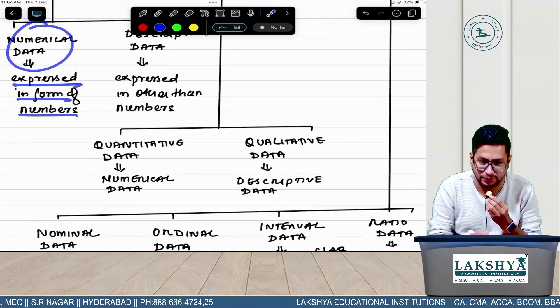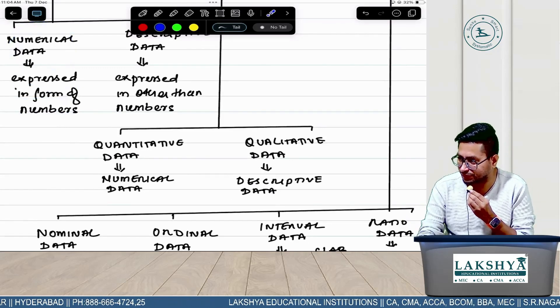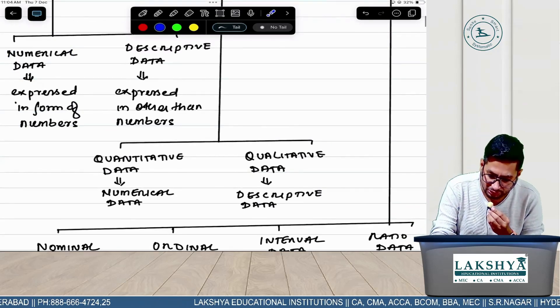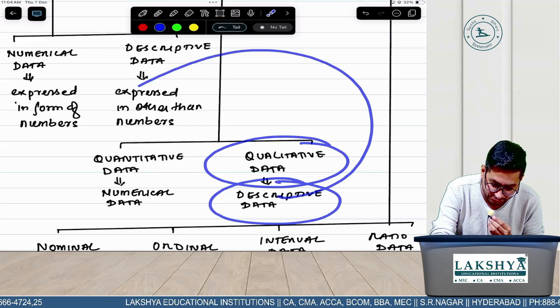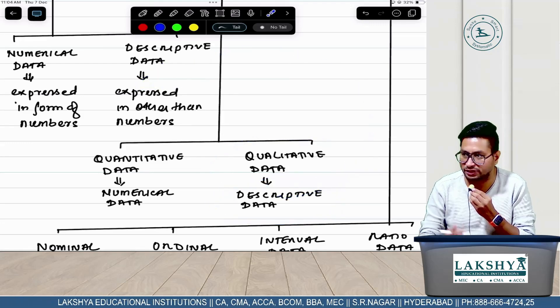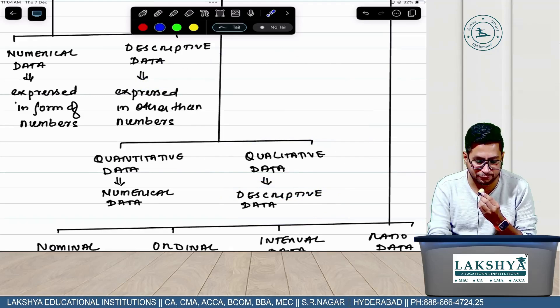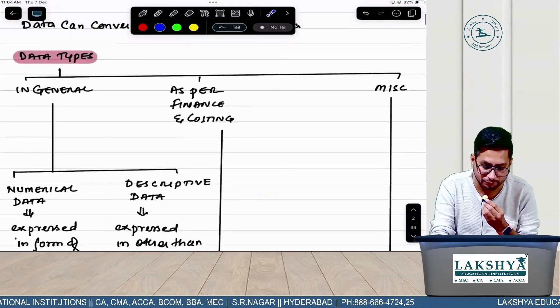Point 1: As per Finance and Costing, data is of two types - quantitative and qualitative. Point 2: Quantitative data is also called numerical data, expressed in the form of numbers, for example pin code, contact number, etc. Qualitative data is expressed in forms other than numbers, like alphanumeric or name of a person.